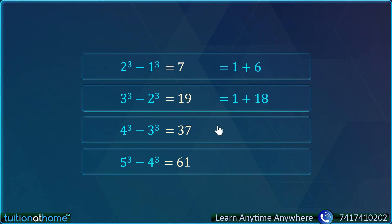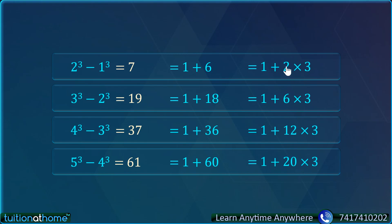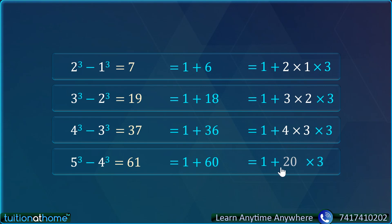If we subtract 1, we get beautiful numbers: 7 = 1 plus 6, 19 = 1 plus 18, 37 = 1 plus 36, 61 = 1 plus 60. The values 6, 18, 36, 60 are all divisible by 3: 6 = 2 into 3, 18 = 6 into 3, 36 = 12 into 3, 60 = 20 into 3. Now check 2, 6, 12, 20: we can write 2 = 2 into 1, 6 = 3 into 2, 12 = 4 into 3, 20 = 5 into 4. So the pattern is: n cube minus (n-1) cube = 1 plus n into (n-1) into 3.